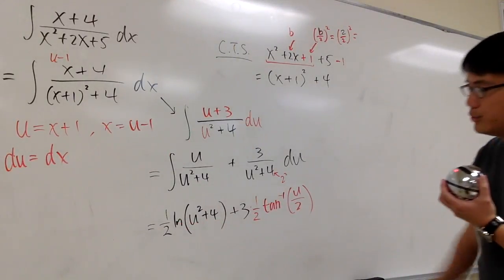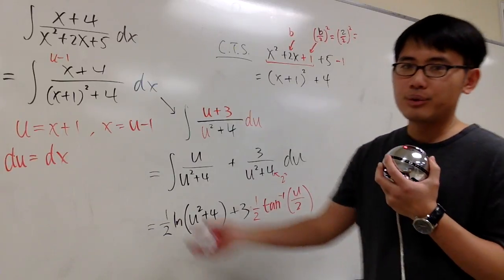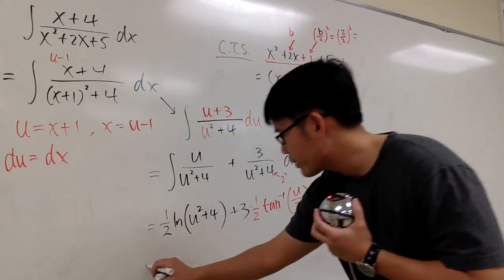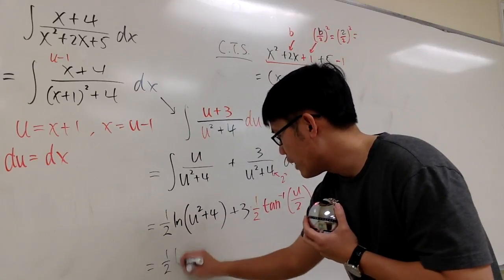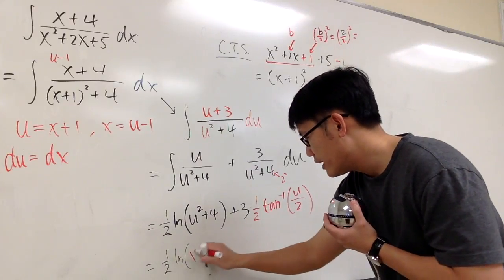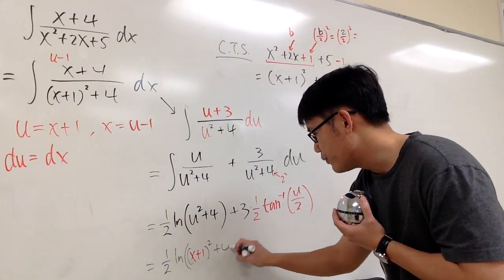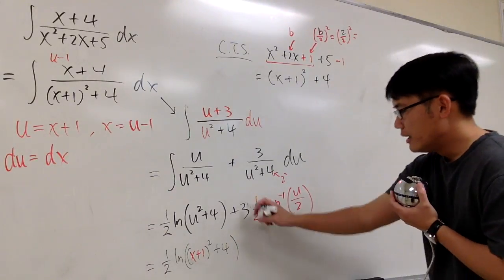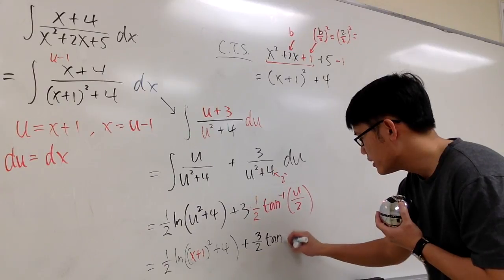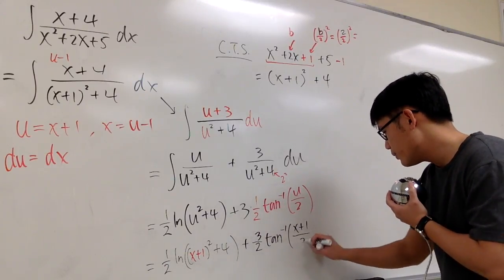And perhaps I can take this u world, this expression, back to the x world. Let's do it. And here we are going to have 1 half ln parentheses u is equal to x plus 1, so we have x plus 1, and you square that, and then you plus 4 to that. And we have plus 3 over 2, inverse tangent. u is x plus 1, so we have x plus 1 over 2.